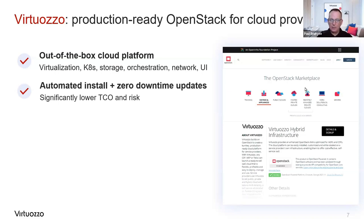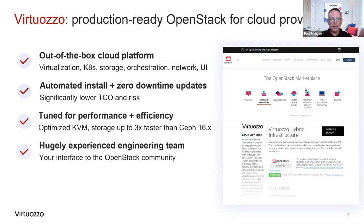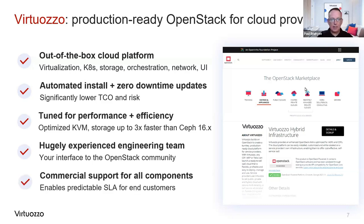We build out a hyper-converged architecture and perform what we call rolling updates - we move virtual instances around, update one particular host at a time, and ripple that through the entire structure. This gives you continuous operation. We've been in the market for over 20 years, spending a lot of time tuning and improving the efficiency of the underlying software and KVM elements. You do not need to know OpenStack to use our platform, and we offer full commercial support. We have a very large support organization offering full 24/7 support.